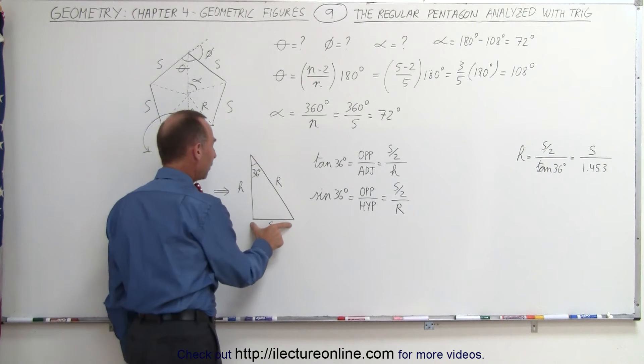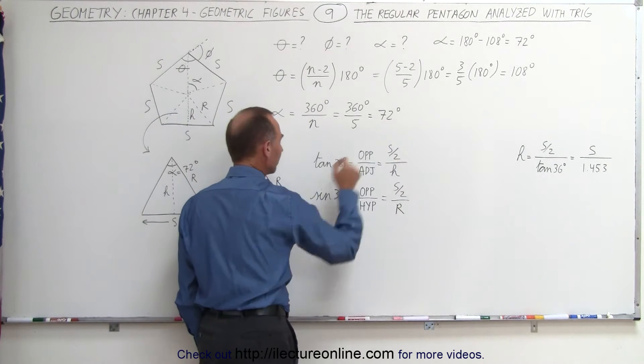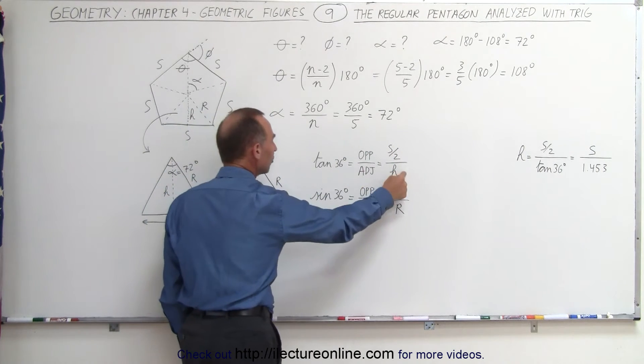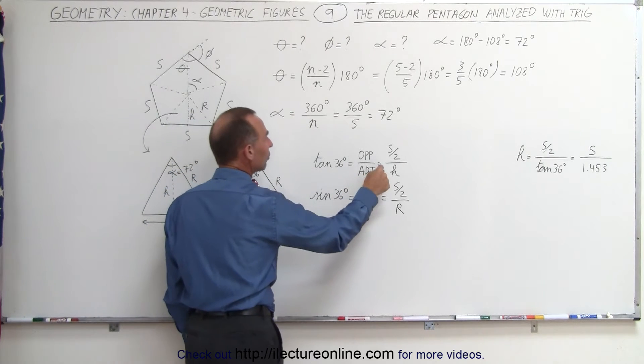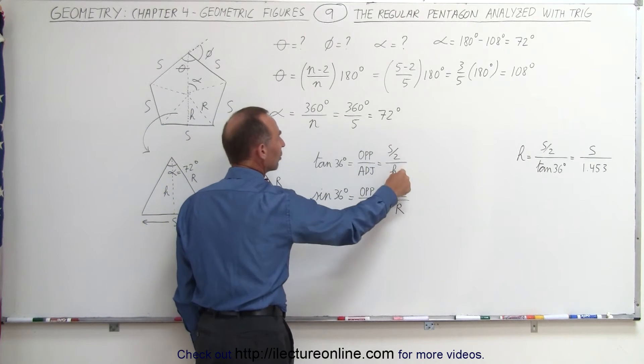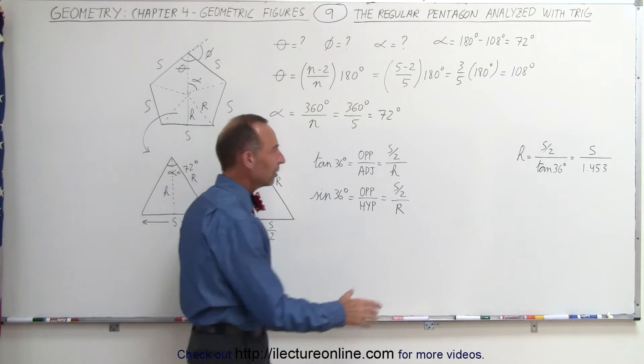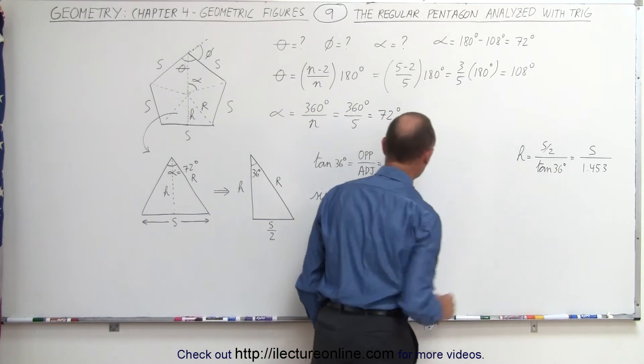If we then say that the opposite side is s over 2, and the adjacent side is equal to h, then the tangent of the angle, in this case 36 degrees, is equal to the ratio of s over 2 divided by h. That's where this equation came from that I showed you last time.